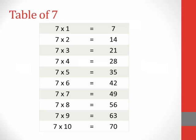Table of 7. 7 1s are 7, 7 2s are 14, 7 3s are 21, 7 4s are 28, 7 5s are 35, 7 6s are 42, 7 7s are 49, 7 8s are 56, 7 9s are 63, 7 10s are 70.